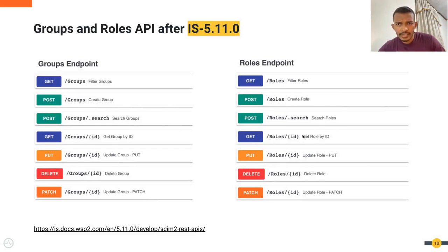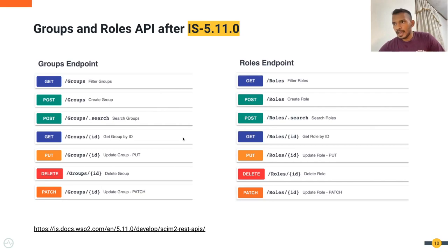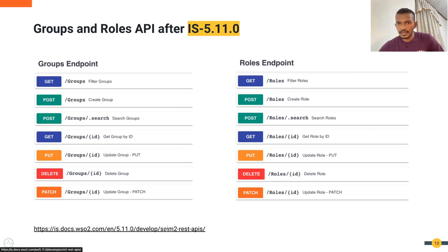In Identity Server 5.11 and 6.0 documentation, you can find the API definitions of groups and roles separately. Both groups and roles endpoints have an endpoint to retrieve entities with filters, sorting parameters, limits, and offsets, and there are endpoints to create an entity, search an entity, get an entity by entity ID, update an entity by entity ID, and delete an entity by entity ID. You can visit the provided link for more information.